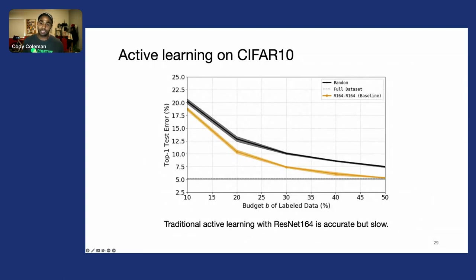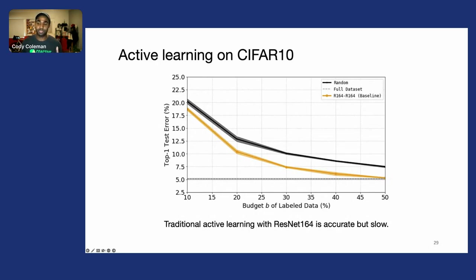If we do active learning with a very accurate model like ResNet-164, we can get to basically the same accuracy with 50% of the data, whereas it would take all 100% of the data with random sampling. So we're getting a 2x improvement in data efficiency.